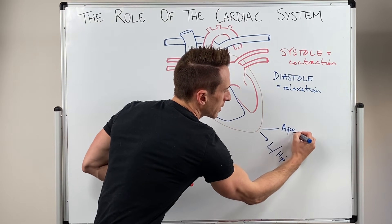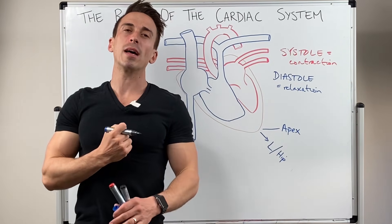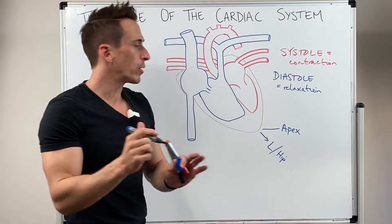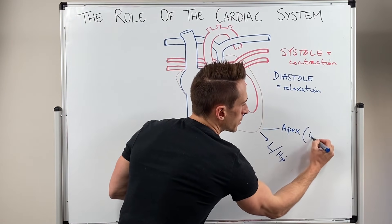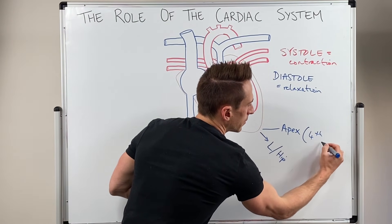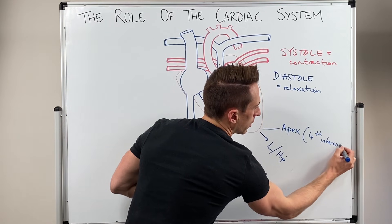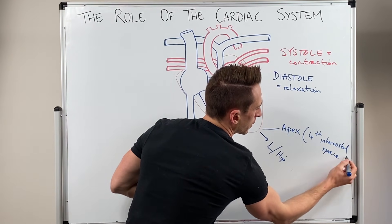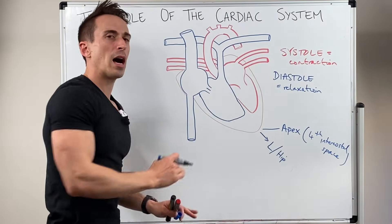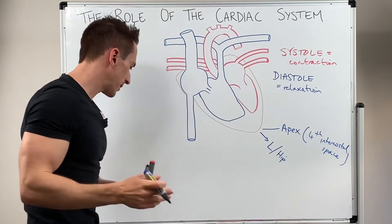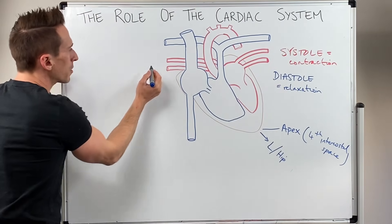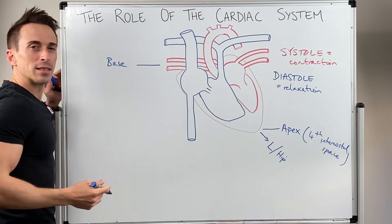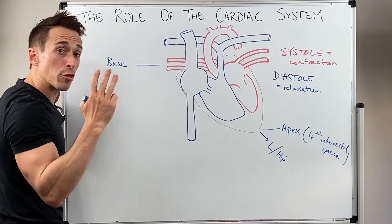This apex is sitting in around about the space between the fourth and fifth rib — what we call the fourth intercostal space. The top of the heart, strangely enough, is called the base, and the base of the heart sits at around about the third rib.